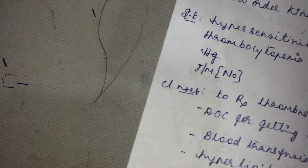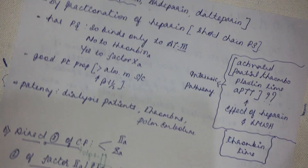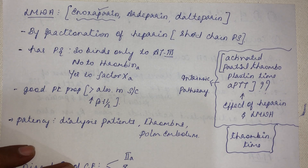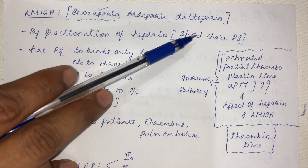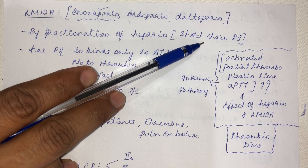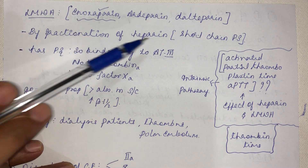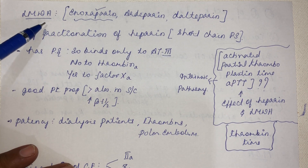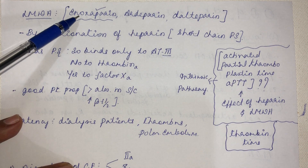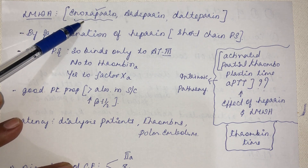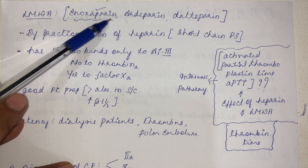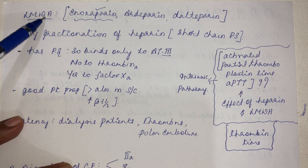Low molecular weight heparin drugs are synthetic, obtained by fractionation of heparin. They are short-chain polysaccharide units. Examples include enoxaparin — a very commonly used anti-coagulant — along with aldiparin, deltaparin, and others. All drugs with the suffix '-parin' come under low molecular weight heparin.